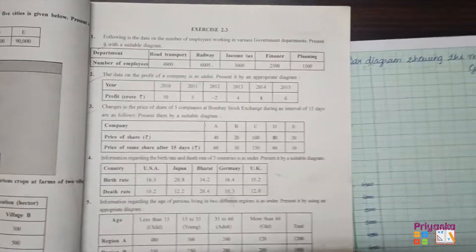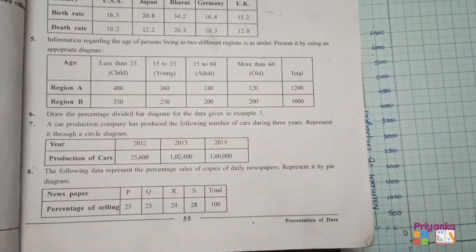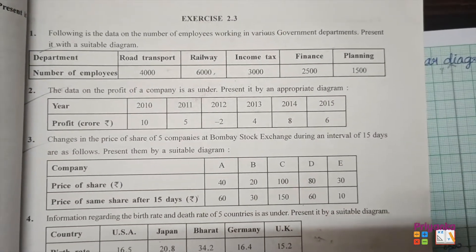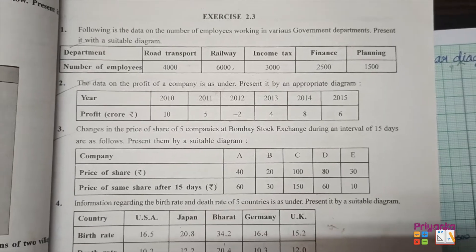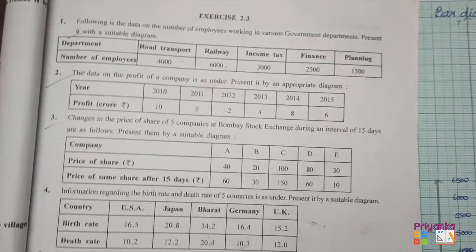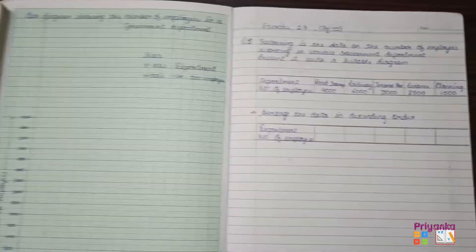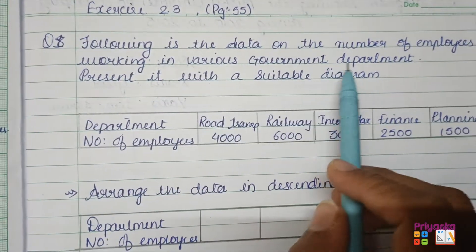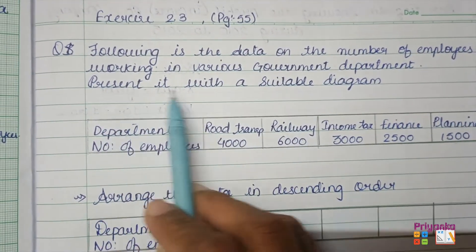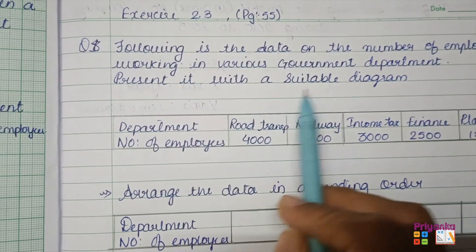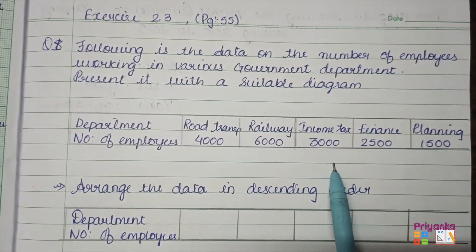We start with Exercise 2.3, which is on page number 55, Chapter: Presentation of Data. In this exercise we are going to learn the presentation of data in graphs or diagrams. Here we start the first question from Exercise 2.3. This is how you have to present your graph book. The following is the data on the number of employees working in various government departments — present it with a suitable diagram.